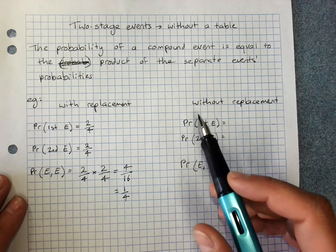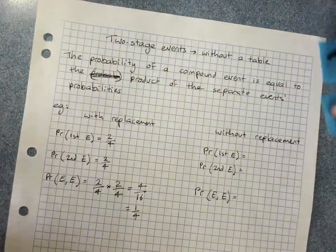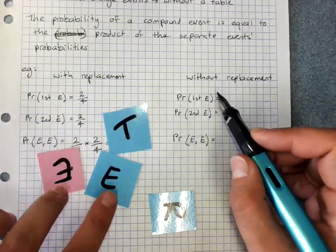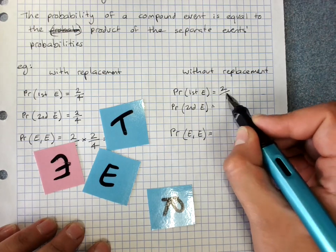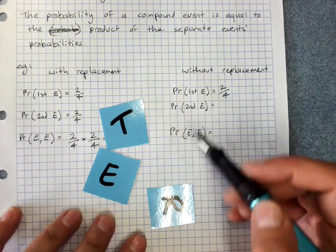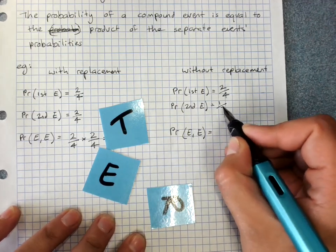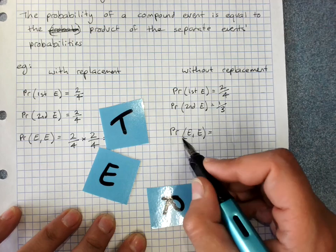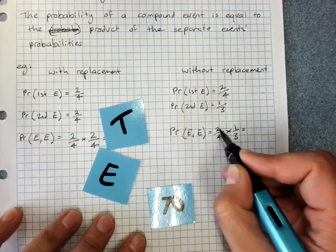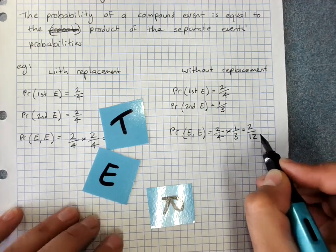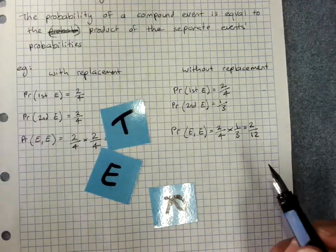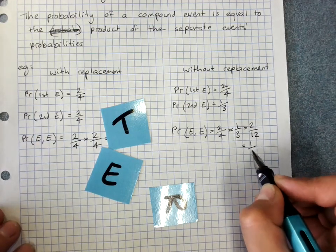Without replacement the probability of the first E was 2 out of 4 still because nothing had changed. But then without replacement that's gone away. The probability of the second E was 1 out of 3. The probability of getting the first E then the second E is 2 out of 4 times 1 out of 3. 2 times 1 is 2, 4 times 3 is 12. And 2 out of 12 is exactly what we got. We simplify it to 1 out of 6.